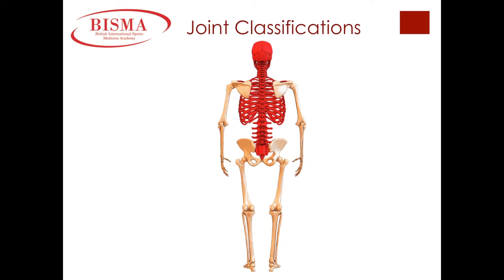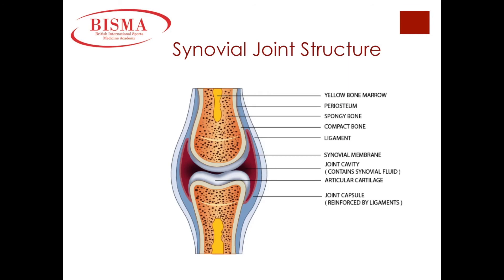Looking at a saddle joint, you can find that within the thumb. The gliding plane synovial joint — an example of that is the action between our collarbone and our scapula within our shoulder girdle. And lastly, the ellipsoid joint — an example can be found within our wrist bones.